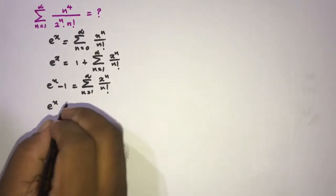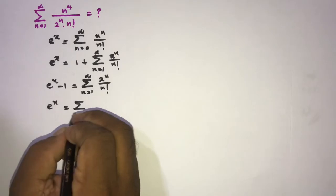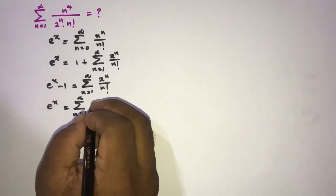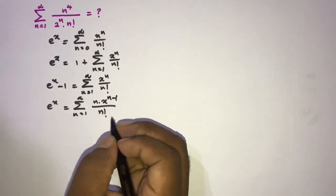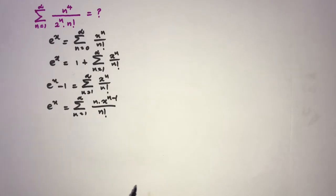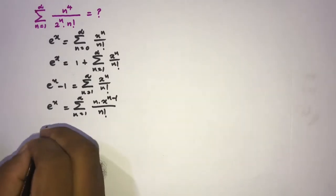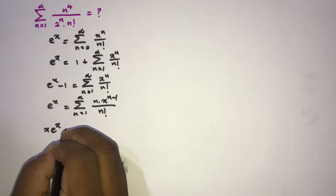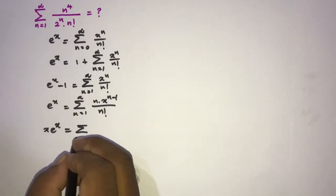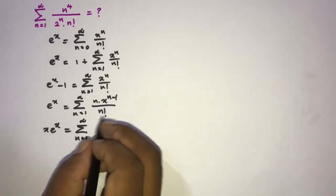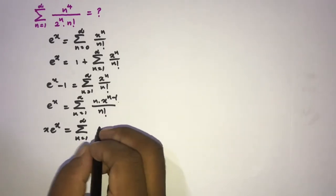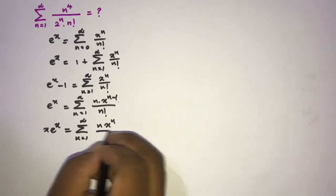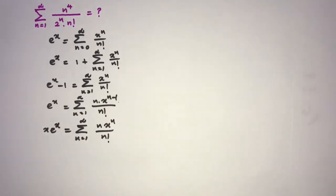Now differentiate both sides with respect to x: e^x equals the sum from n=1 to infinity of n times x^(n-1) over n factorial. Then multiply both sides by x, so x·e^x equals the sum from n=1 to infinity of n·x^n over n factorial, since the x cancels the x^(n-1).